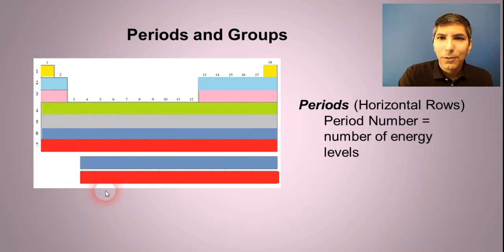It's important to know that the period number that an element is in also tells us the number of filled energy levels that that element has. So for example, if we were to look at sodium as an example, it's in period three, we say that it has three energy levels, and we'll talk more about what that means a little bit later in the course.